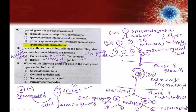Which group of cells in the male gonad represents the haploid condition? In spermatogenesis: spermatogonium is diploid, primary spermatocyte is diploid, secondary spermatocyte is haploid, and spermatid is haploid. Germinal epithelium is diploid. Secondary spermatocyte is one of the haploid cells. The right answer is option C.